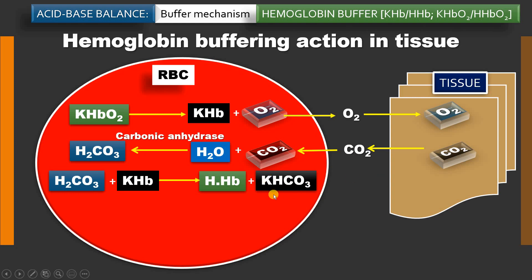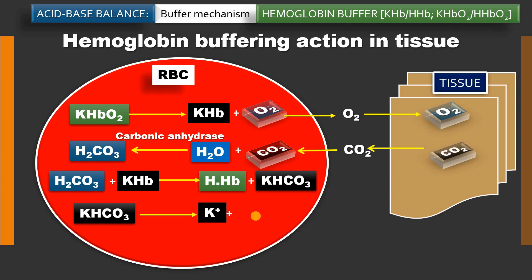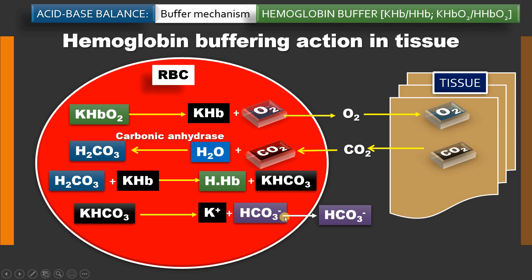Potassium is always intracellular whereas sodium is extracellular, so potassium combines with bicarbonate to form potassium bicarbonate, which dissociates to give potassium and bicarbonate. There is accumulation of bicarbonate inside the RBC, and this excess bicarbonate moves out to the plasma of the capillaries. Remember, this bicarbonate is actually derived from the tissue carbon dioxide: CO2 forms carbonic acid, which dissociates to give bicarbonate.